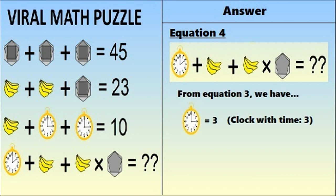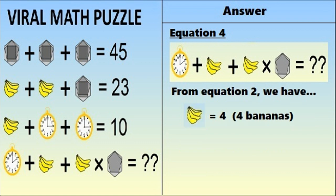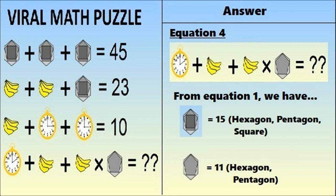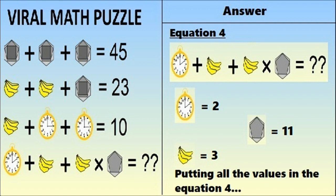From equation 3, a clock showing time 3 equals 3, so a clock showing time 2 equals 2. From equation 2, 4 bananas equals 4, so 3 bananas equals 3. The shape in equation 1 was a hexagon containing a pentagon containing a square — adding all sides: 6 plus 5 plus 4 equals 15. But in equation 4, the shape is a hexagon containing only a pentagon, so 6 plus 5 equals 11.